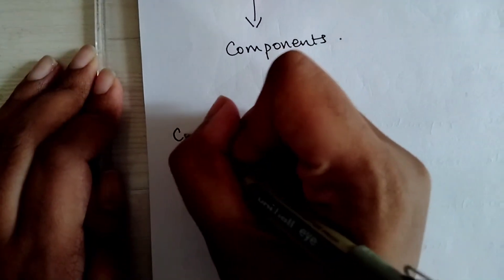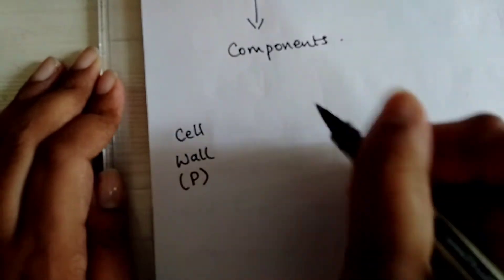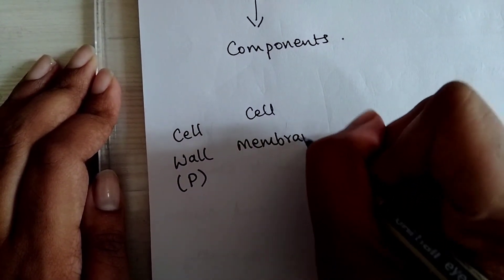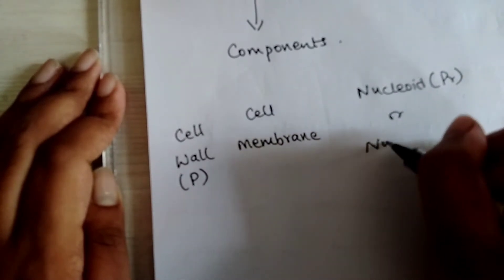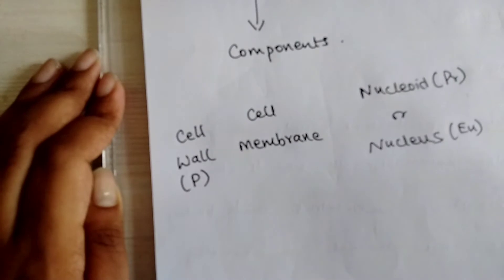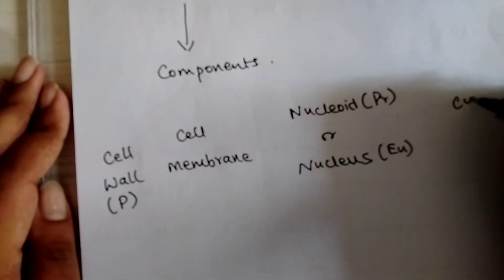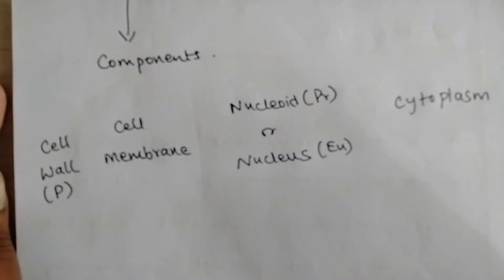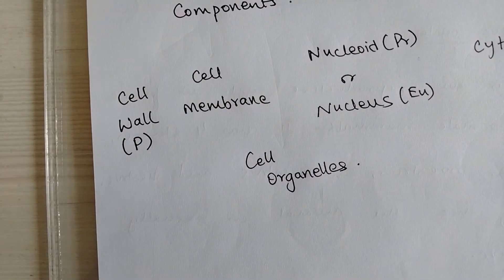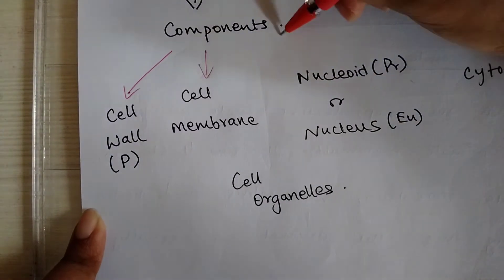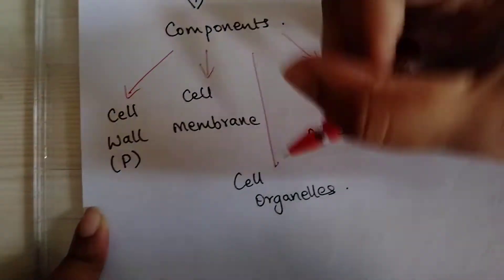We'll leave the types here and move on to the components of the cell. A cell might have a cell wall, mostly found in plant cells. It will have a cell membrane. If it is a prokaryotic cell it will have a nucleoid, or if it is a eukaryotic cell it will have a nucleus. It also has cytoplasm — the jelly in which everything else in the cell is present — and cell organelles which are present within the cytoplasm. So our broad components are: cell wall, cell membrane, nucleus, cytoplasm, and cell organelles.